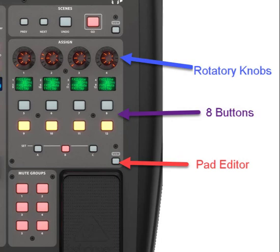As you see on the screen, I have the section that we're going to be working on. We're going to be working on the four rotary knobs, the eight buttons, and the pad editor. To get started, even before you load the template, you want to click on the pad editor button — it says 'View' — so click on that View button to get started.